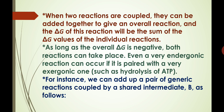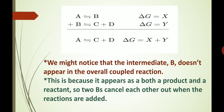Even a very energetically unfavorable reaction can occur if it is paired with a very exergonic one, such as hydrolysis of ATP. For instance, we can add up a pair of generic reactions coupled by a shared intermediate B, as shown in the next slide. Here, A gives rise to B and the reaction is reversible, and delta G for this reaction is X. In the other reaction, the product of the first reaction is the reactant for the second reaction: B gives rise to C plus D, and delta G for this reaction is Y. When we add up these two reactions, we get A gives rise to C plus D, and delta G equals X plus Y. We notice that intermediate B does not appear in the overall coupled reaction.